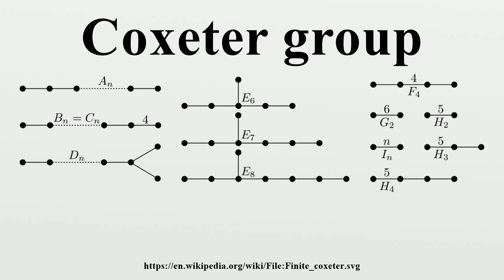In each case, the quotient group is itself a Coxeter group, and the Coxeter graph is obtained from the Coxeter graph of the quotient by adding another vertex and one or two additional edges.